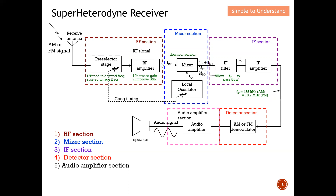Once the signal is boosted large enough, it is passed to the mixer section. The mixer's role is to convert the high frequency to a lower frequency, while the bandwidth and shape of the signal remain intact. This frequency conversion is achieved with the help of a local oscillator. After the frequency is converted, it passes to the IF section, which contains two main components: an IF filter and an IF amplifier.